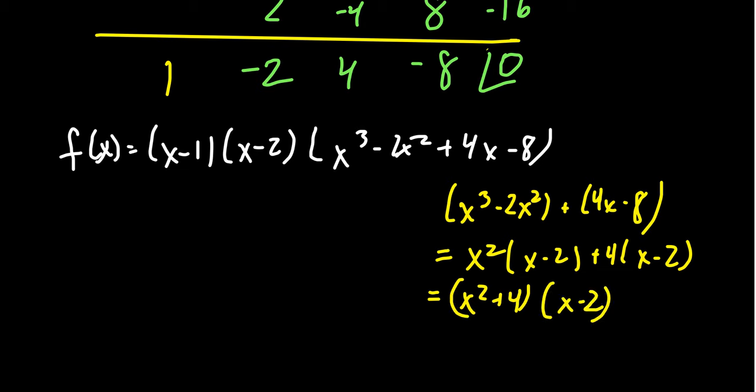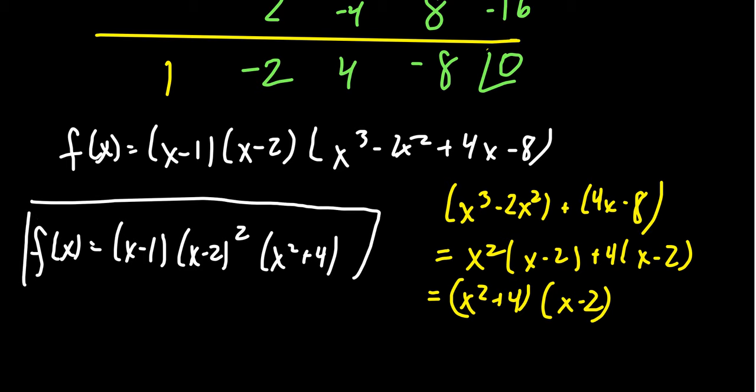And so then the factorization of f of x turns out to be x minus 1, x minus 2 turned out twice so it's a repeated root, and then you get x squared plus 4. Which the roots of that thing are going to be plus or minus 2i. So there's no real roots of that polynomial. This is the real factorization of the polynomial.